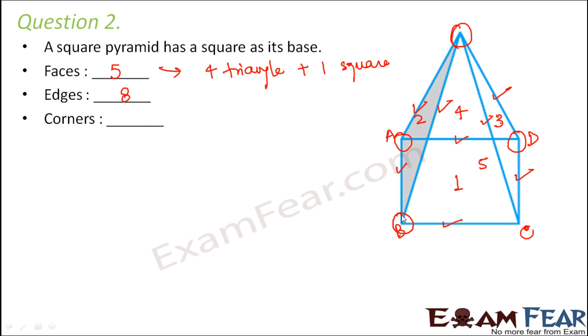How about corners? This is one corner because here the edges meet, this is another corner, this is another corner, this is another corner, and this is yet another corner. So there are five corners or five vertices.